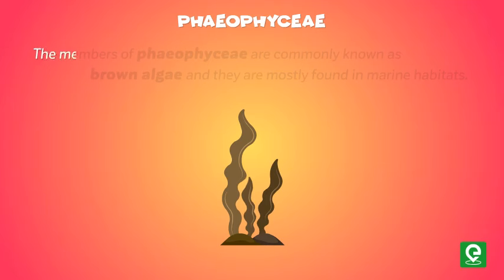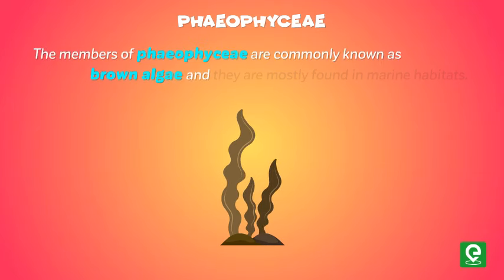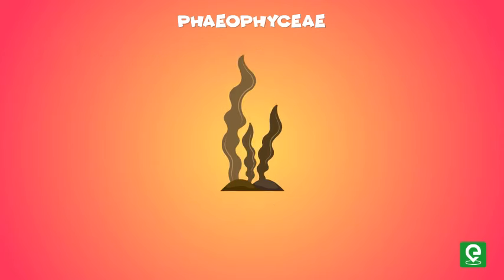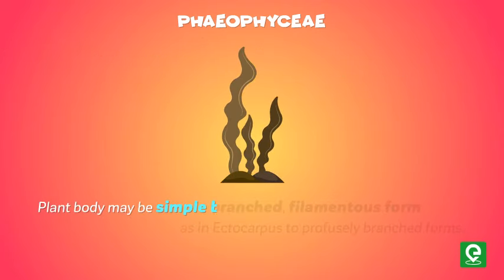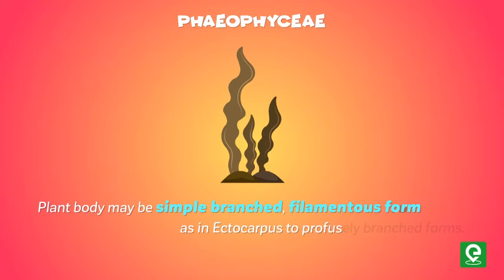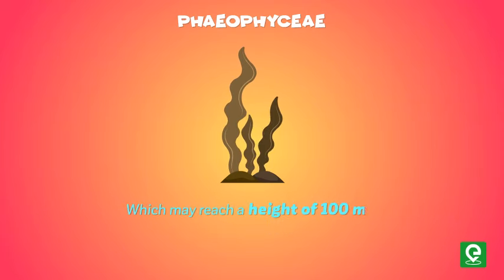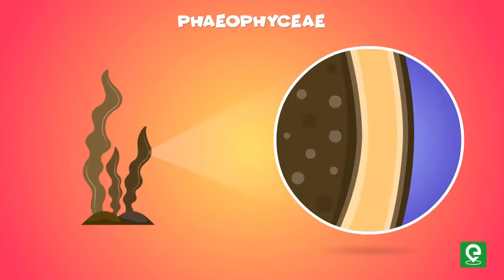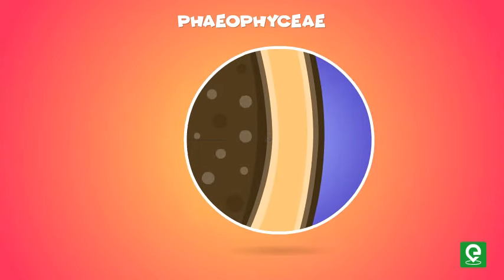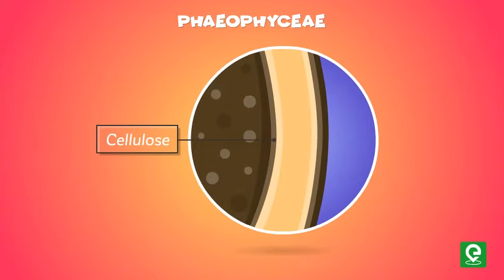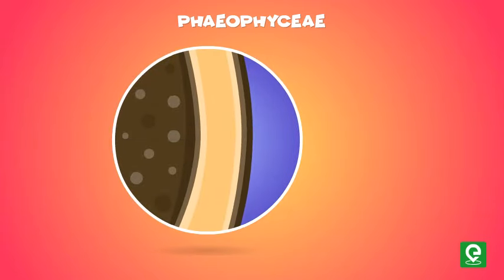Phaeophyceae: The members of Phaeophyceae are commonly known as brown algae and they are mostly found in marine habitats. The plant body may range from simple branched filamentous forms like Ectocarpus to profusely branched forms which may reach a height of 100 meters. The cell wall is made up of two layers: an inner cellulose layer and an outer layer.